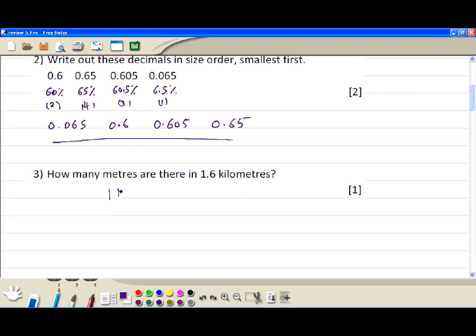Number three. One kilometer equals one thousand meters, so 1.6 times 1000 is 1600 meters.